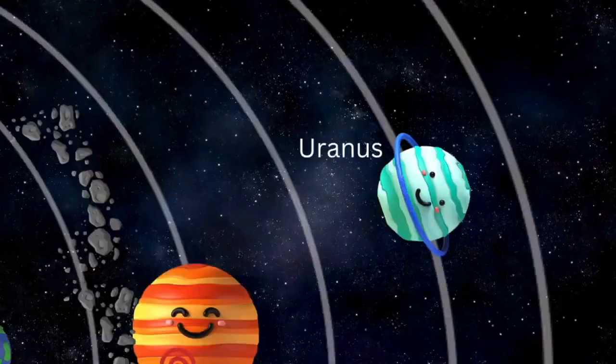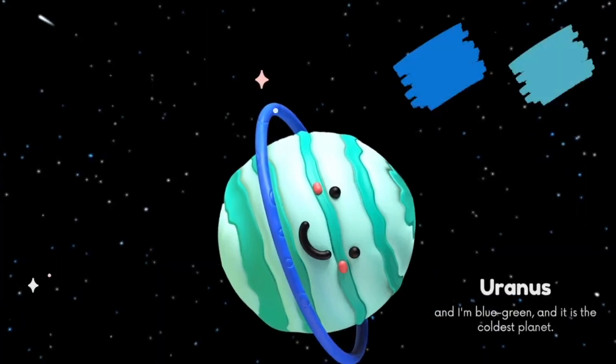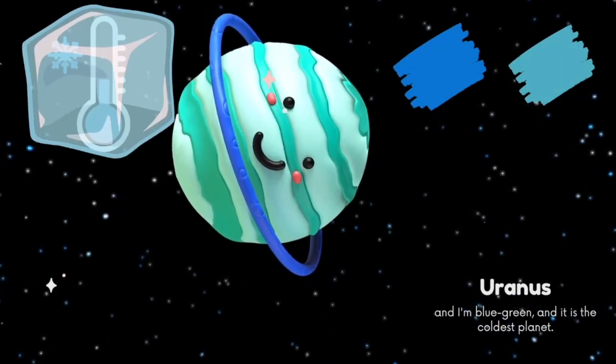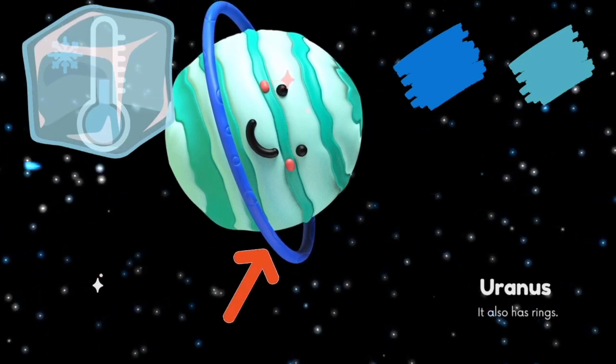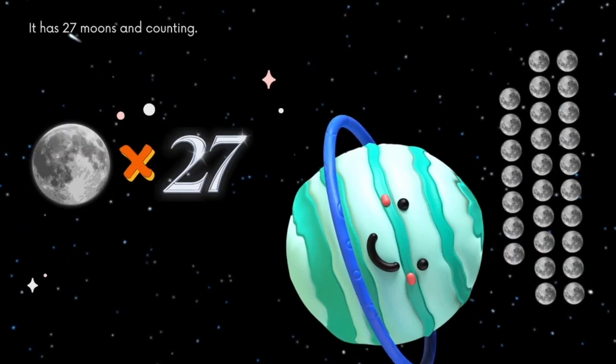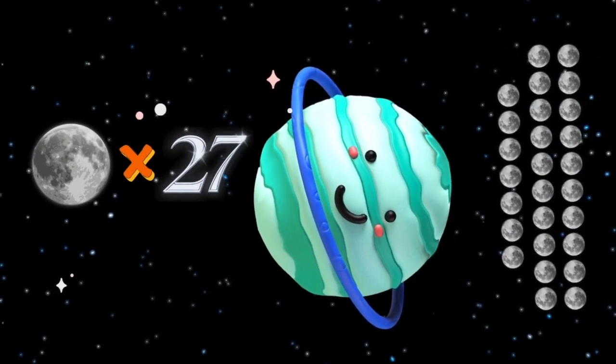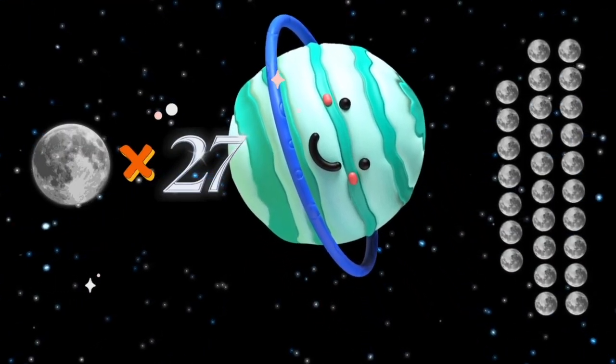Now let's take a look at Uranus. Uranus is a blue-green color planet and it is the coldest planet in our solar system. It also has a ring which is vertical in shape and it has 27 moons and counting.